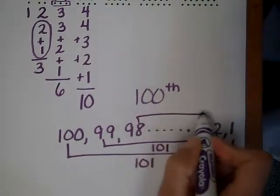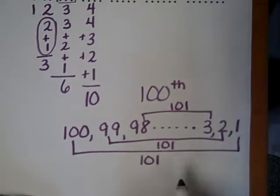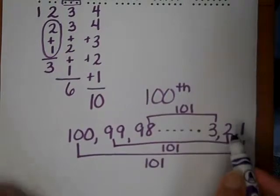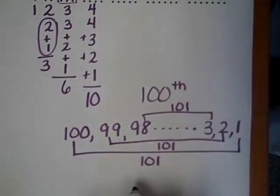And then he paired up the ninety-eight with the three, a hundred and one. So as he continued to do this he realized that if he added the highest and the lowest number going in, he would always get one hundred and one.